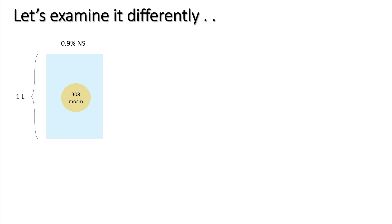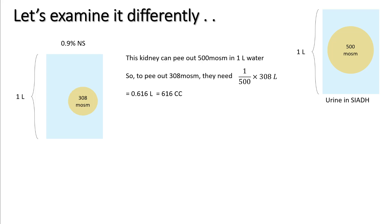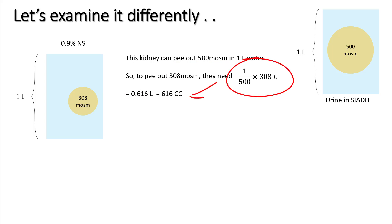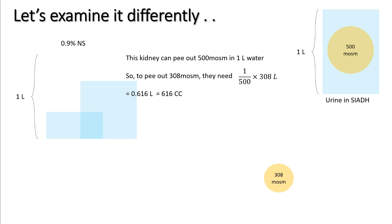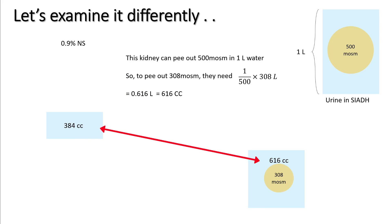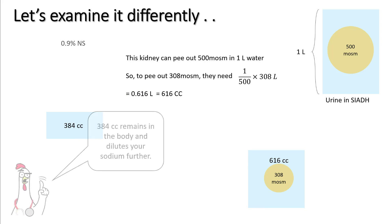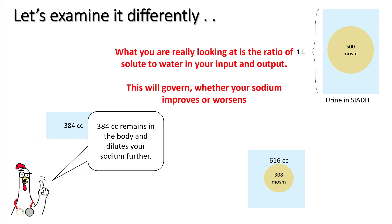A bag of normal saline contains 308 mOsm of solute in one litre of water. The patient's urine has 500 mOsm per litre. To excrete the 308 mOsm received from the saline, the kidneys only need to produce 616 cc of urine. So out of one litre given, 616 cc is excreted and 384 cc remains as free water, diluting sodium further and worsening hyponatremia. The key is the solute-to-water ratio in inputs versus outputs.